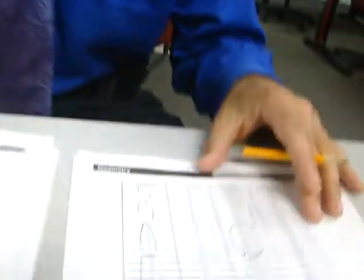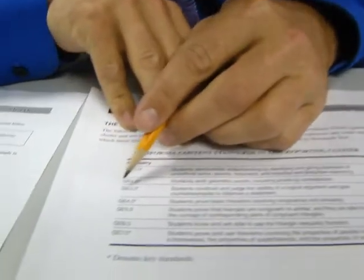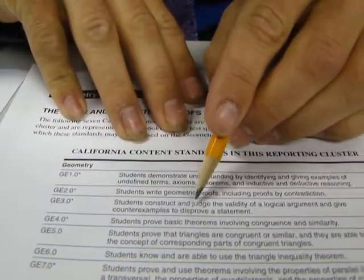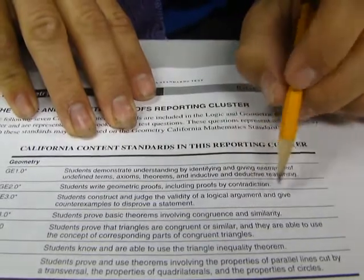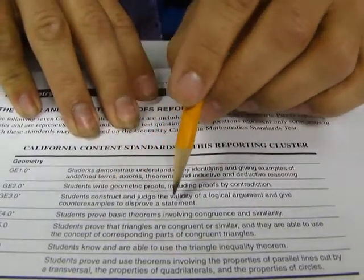Hi everybody and welcome. We're going to be doing Standard 3 today. Let's take a look. Sorry, this one right here. Standard 3, students construct and judge the validity of a logical argument and give counterexamples to disprove a statement.